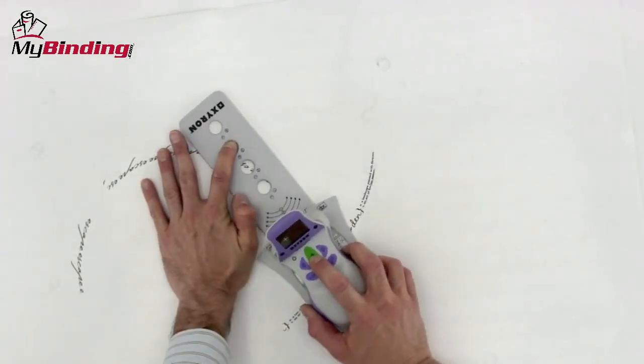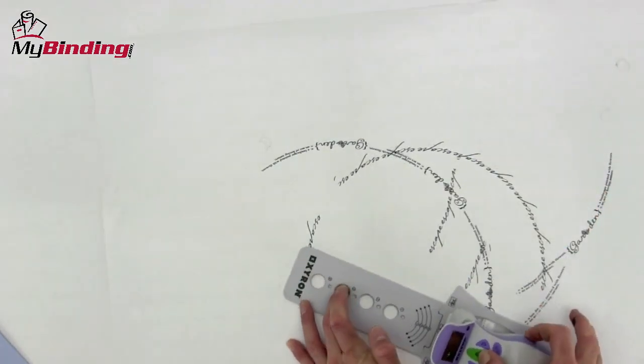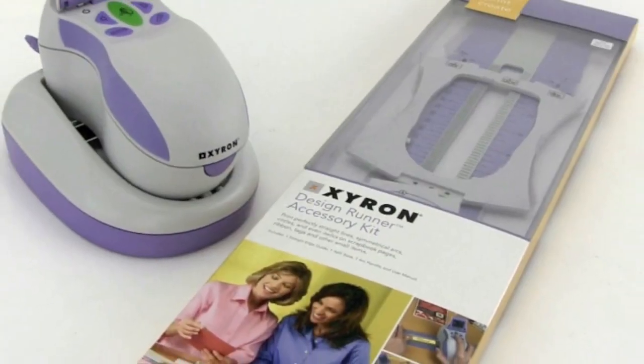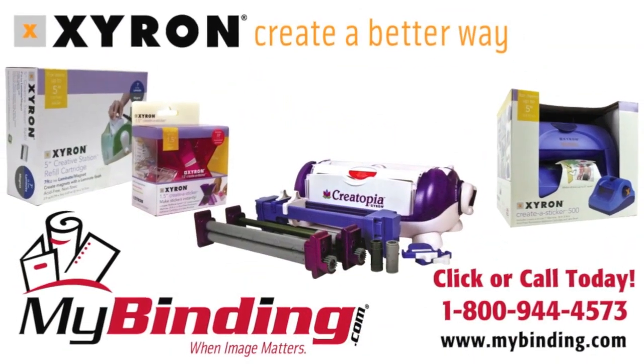Superior craft making requires precision on this level, and the Xyron Design Runner accessory kit is designed for that purpose. For more demos, reviews, how-tos, and ideas, check out MyBinding.com.